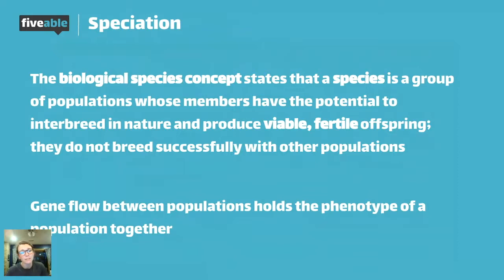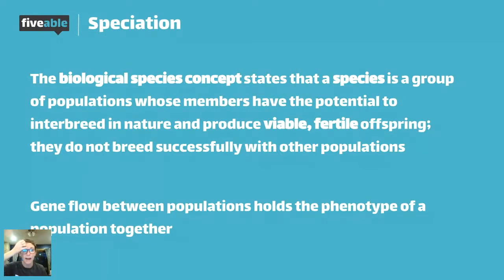Something really important with the species concept is that gene flow between populations holds the phenotype of that population together. In order for speciation to occur, you need to stop gene flow between the two populations. Populations are the same species living in the same area. If those populations break off into two different areas — like we discussed with Founder's Effect in microevolution — we need to ensure genes are not flowing between those populations anymore. Otherwise, they'll go back to being a mixed grouping of the same species.